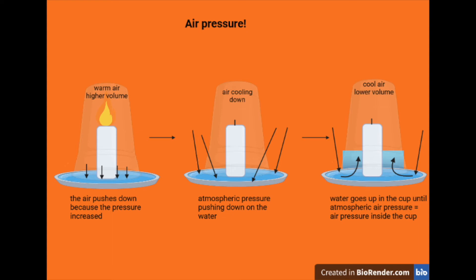Once it starts shrinking, we will now have a higher air pressure on the outside pressing down on the water in the dish. This air pressure on the outside is called atmospheric pressure. So now the atmospheric pressure is higher than the pressure inside the glass.